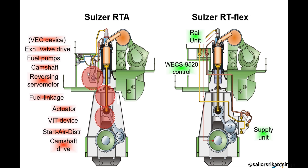Due to fewer components, we have fewer problems and the weight of the main engine is also reduced. You can see all these large red-colored gears — they are not present on the electronic engine. The components removed include: VEC device, exhaust valve drive, fuel pump, camshaft, reversing servo motor, fuel linkage actuator, VIT device, start air distributor, and camshaft drive. Instead of all these, we have the Wärtsilä engine control system.